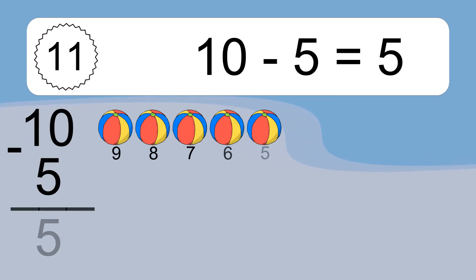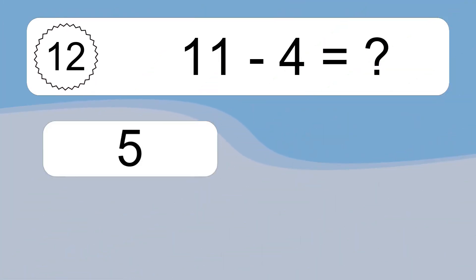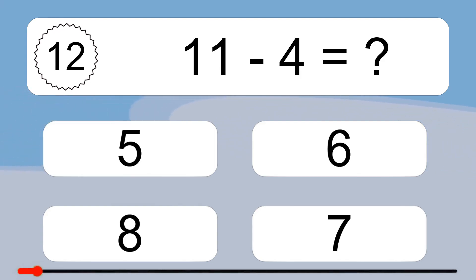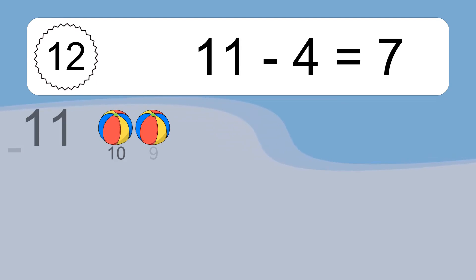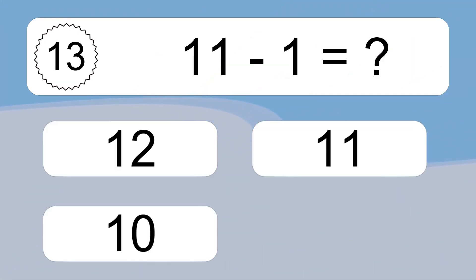10 minus 5 equals what? 10 minus 5 equals 5. Let's count it: 9, 8, 7, 6, 5. 11 minus 4 equals what? 11 minus 4 equals 7. Let's count it: 10, 9, 8, 7.